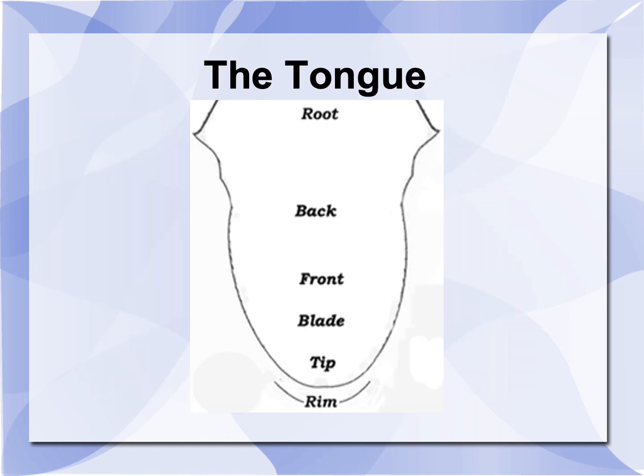We are now looking at the tongue from the top, starting from the part of the tongue which is nearest to the opening of the mouth. We have the rim, then the tip, the blade, the front, the back, and the root.